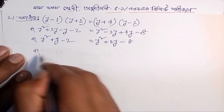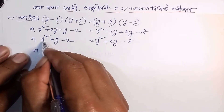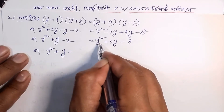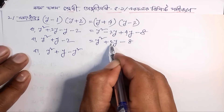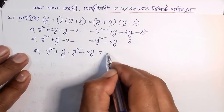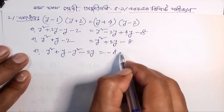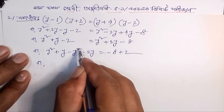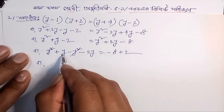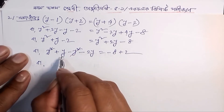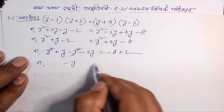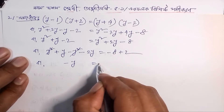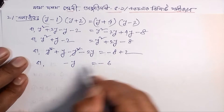It is equal to y squared plus y minus y squared plus 2y minus 2y is equal to minus 8 plus 2, which gives minus 6. So y is equal to minus 6.